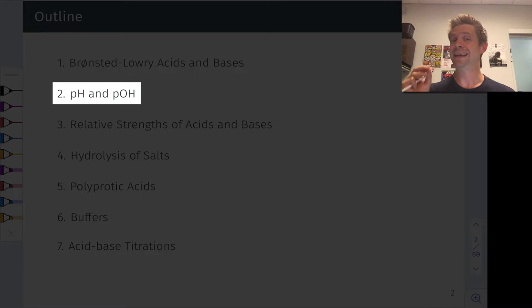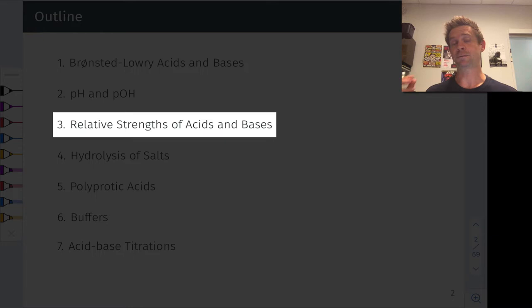In the third section, we'll introduce this idea that acids and bases can have different strengths, and in fact, we can use equilibrium constants to capture those strengths quantitatively. So whereas we may have seen in previous units this qualitative idea of strong versus weak acids, we can put a quantitative spin on that now with the relative strengths of acids and bases and the acidity constant.